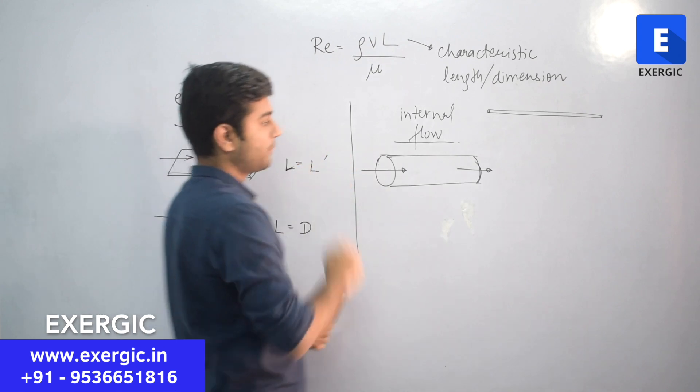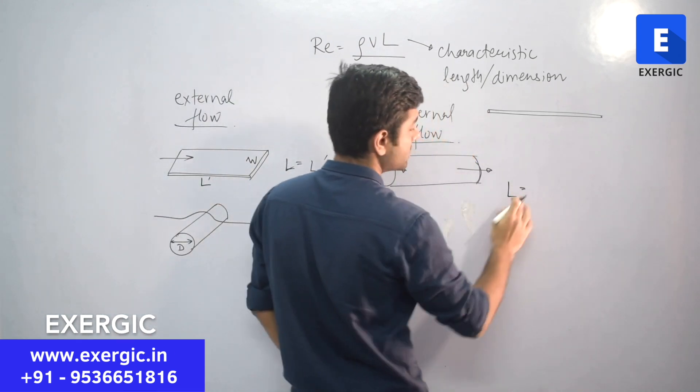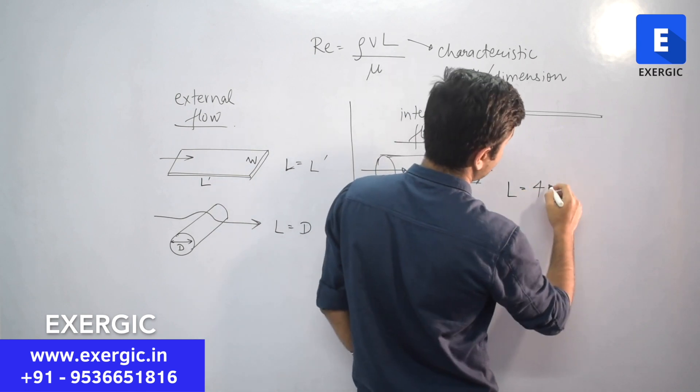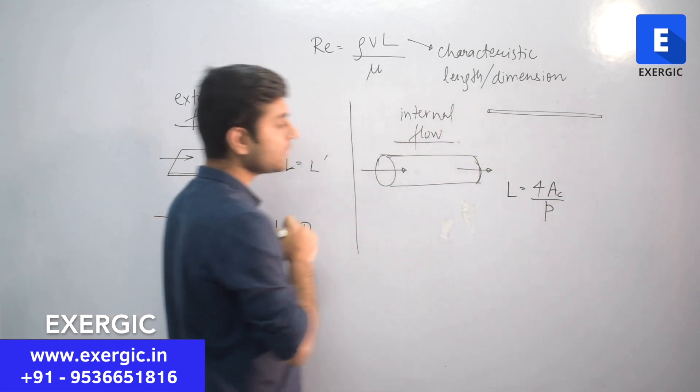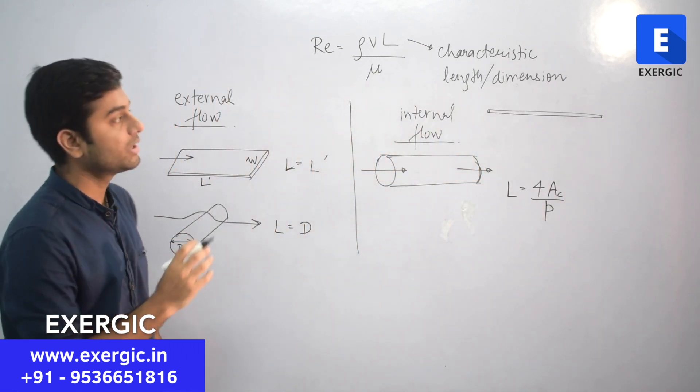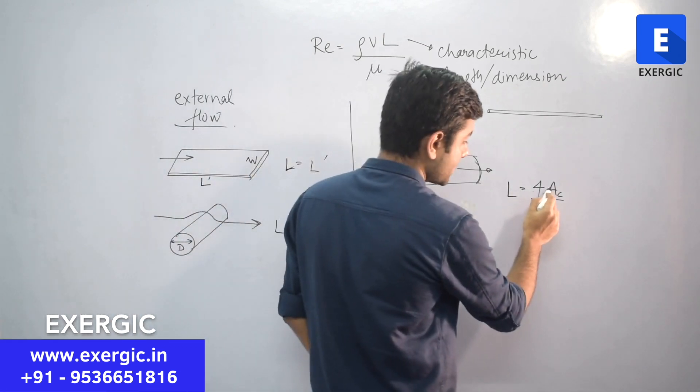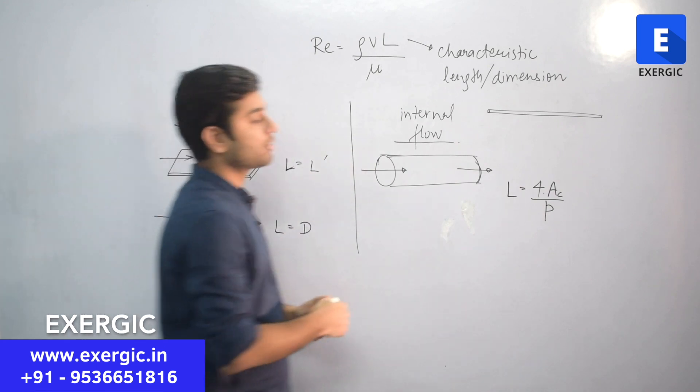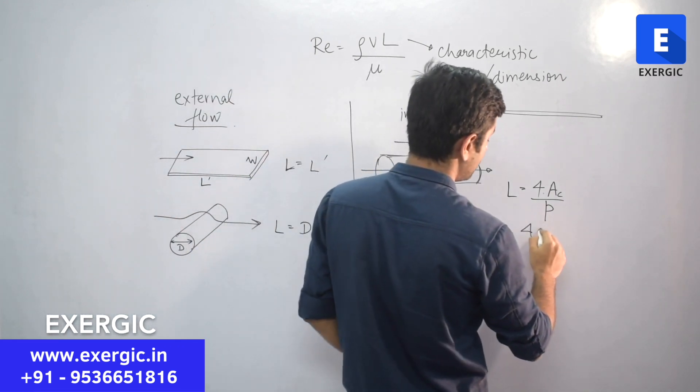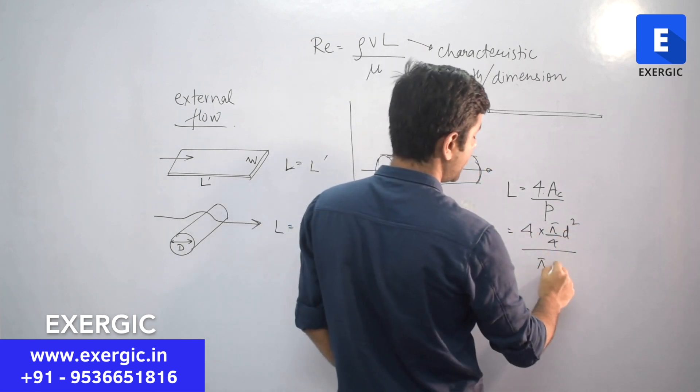What about internal flow? For internal flow, the characteristic length or dimension is given by 4 cross sectional area divided by perimeter. This is the expression from which you can calculate the characteristic dimension: 4 multiplied by cross sectional area divided by perimeter. Now, if the pipe is circular, then cross sectional area is equal to π/4 d², perimeter is equal to πd.